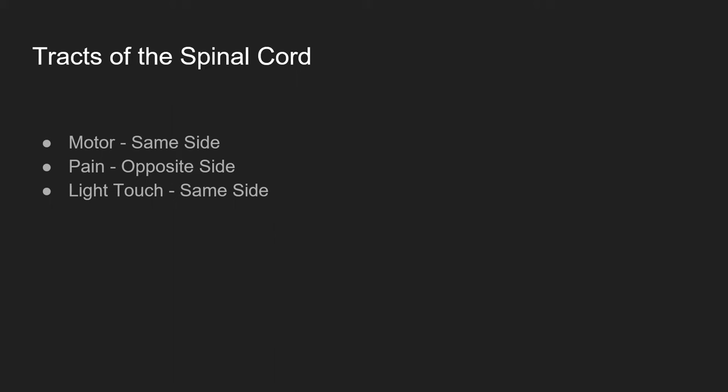There are three tracts of the spinal cord: the motor tract, the pain tract, and the light touch tract. These coordinate movement, the perception of pain, or the perception of light touch to and from whatever the stimulus is. If I wanted to move the right arm, that signal is sent along the right side of the spinal cord. If I smash my left toe with a hammer, that signal is sent up the opposite side — the right side of my spinal cord. Whereas if someone touched me on the left shoulder, that signal is sent up the same side — the left side. This is important when discussing incomplete spinal cord injuries.